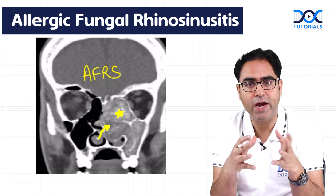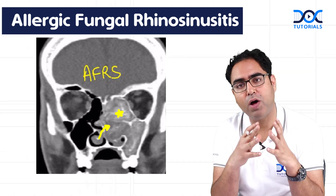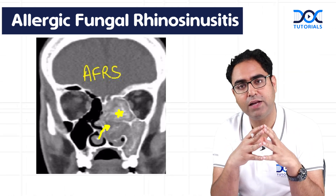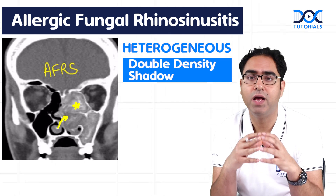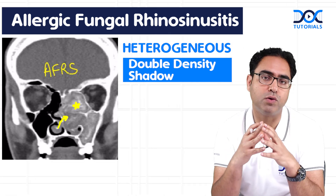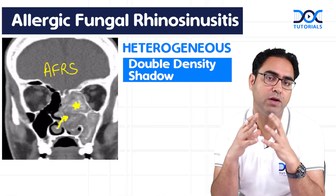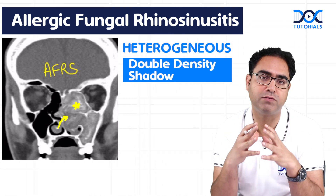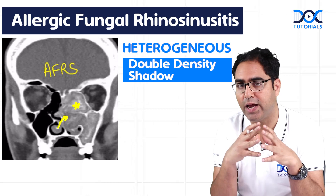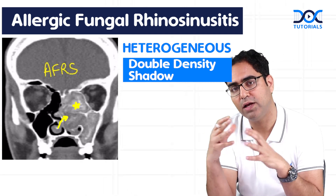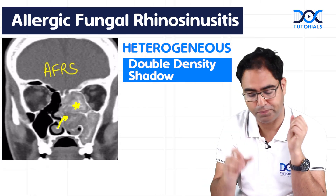That is why AFRS polypi on CT scan show heterogeneous or double density shadows — a very popular question for the image-based section of the upcoming INICET or the NEET-PG paper.